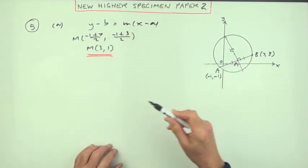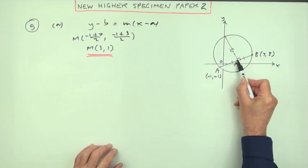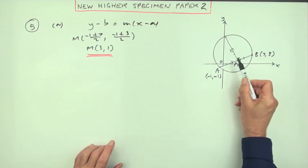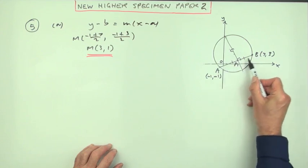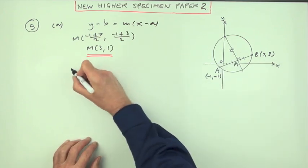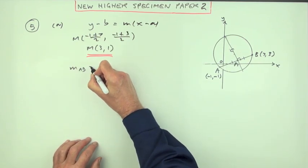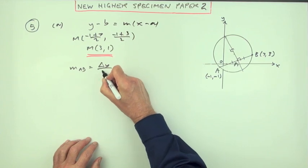Now I need the gradient then. What's the gradient of this? Well, I've only got one point on the line, so I'll have to get the gradient by referencing it to this line which is at right angles, so I'll get the gradient of AB.